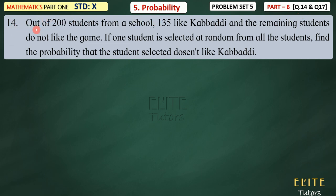In this question, out of 200 students from a school, 135 like a buddy. In one school, there are total 200 students. There are 135 students who like a buddy, and the remaining students do not like the game. 200 minus 135 equals 65 — those kids don't like a buddy.